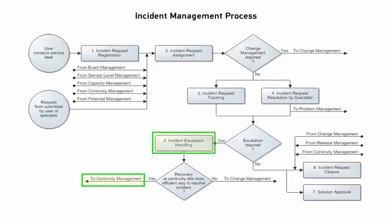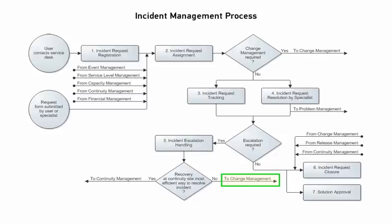If the incident request must be escalated to the service owner or the on-duty manager, the specialist reassigns the request record by using the Assigned Group and Assignee fields as previously shown. If the service owner determines that an emergency change request is a better choice than recovering the service at its continuity site, they create that change request record by clicking Create Change as previously shown.